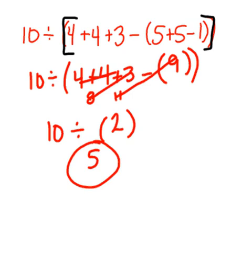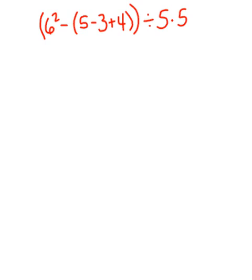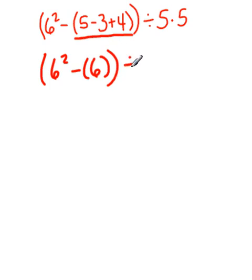So number 2. Still order of operation, 6 squared minus 5 minus 3 plus 4. Notice that these values are in a set of grouping symbols. So I have to complete that first. So I have 6 squared minus 5 minus 3 plus 4 gives me 6. I'm going to keep it inside. Divided by 5 times 5.